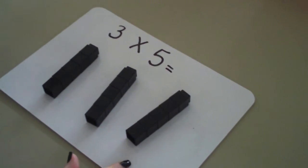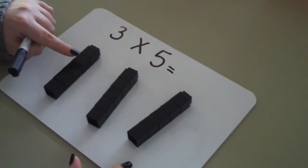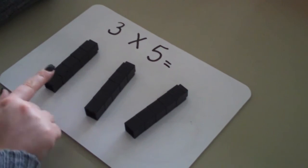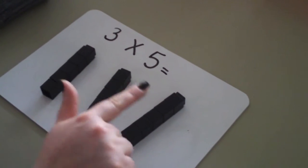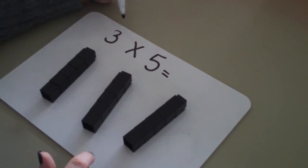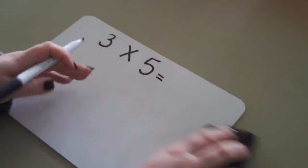Here's my 3 groups and I've got 1, 2, 3, 4, 5 cubes in each group. 5, 10, 15. So 3 times 5 equals 15.